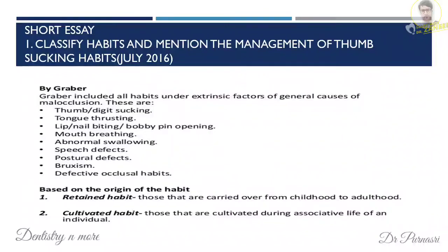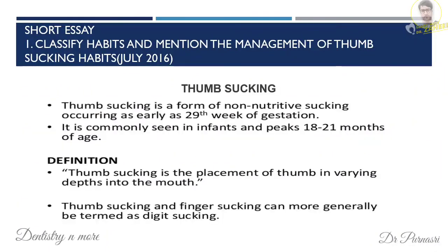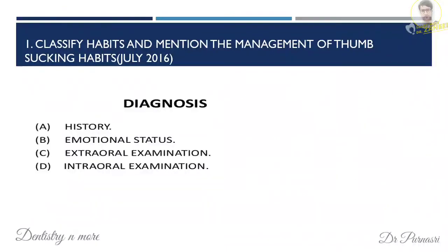Now the second part: management of thumb sucking habits. Thumb sucking is a form of non-nutritive sucking and it starts as early as the 29th week of gestation. The definition is the placement of thumb in varying depth into the mouth. Thumb sucking and finger sucking together are called digit sucking habits. You can shortly mention the diagnosis, which will be based on history, emotional status, extraoral examination, and intraoral examination.